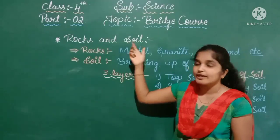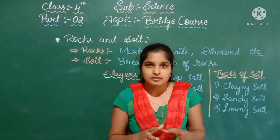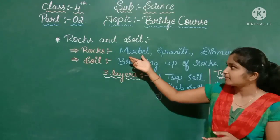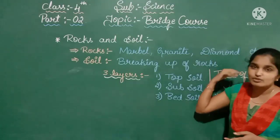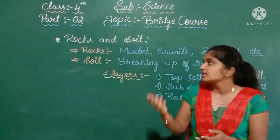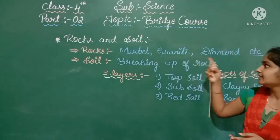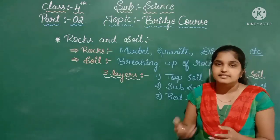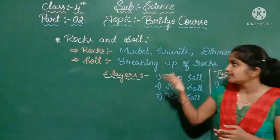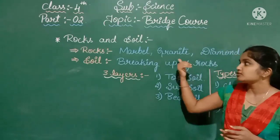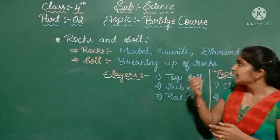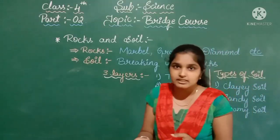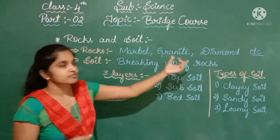Rocks and soil — daily we see many rocks. There are many types of rocks such as marble, granite, diamond, and so on. Marble is used as tiles in houses and buildings. Granite is also used in buildings. Diamond is used as a jewel. These are all different types of rocks.